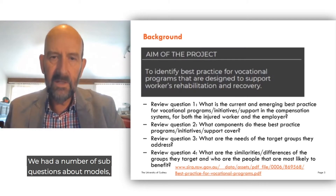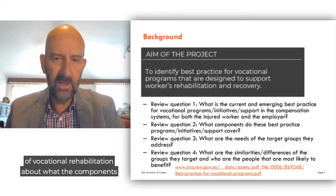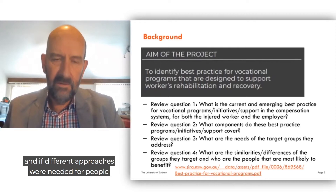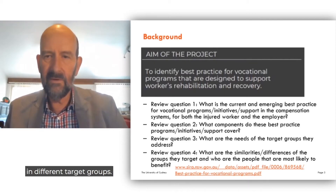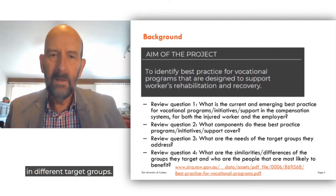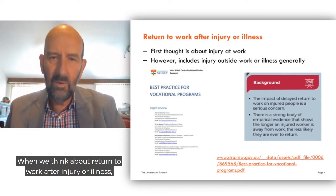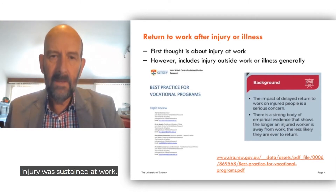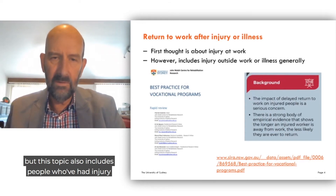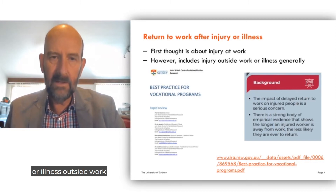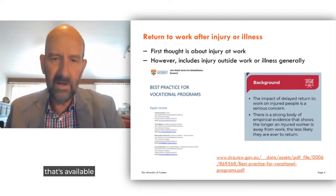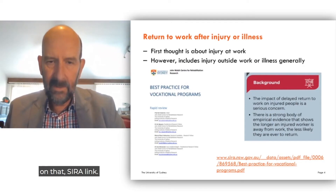The aim of our project was to identify best practice for vocational rehabilitation programs that are supporting workers' rehabilitation and recovery. We had a number of sub-questions about models of vocational rehabilitation, about what the components of those models were, if there are particular target groups, and if different approaches were needed for people in different target groups. When we think about return to work after injury or illness, this topic also includes people who've had injury or illness outside work and who are trying to get back to the workforce. We've produced a document that's available on the CIRA link.